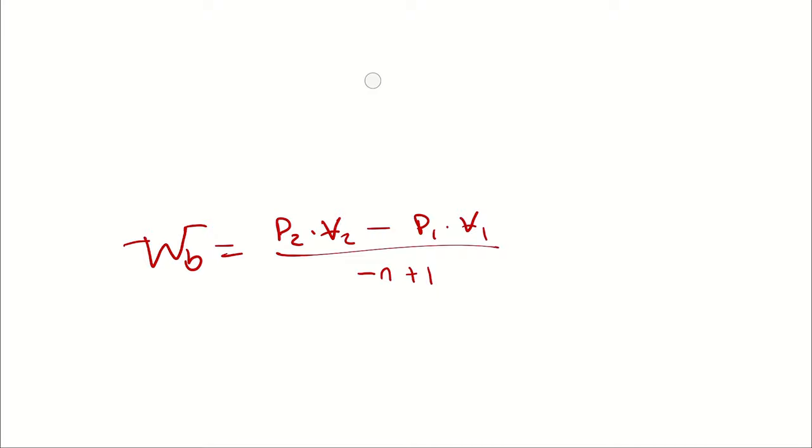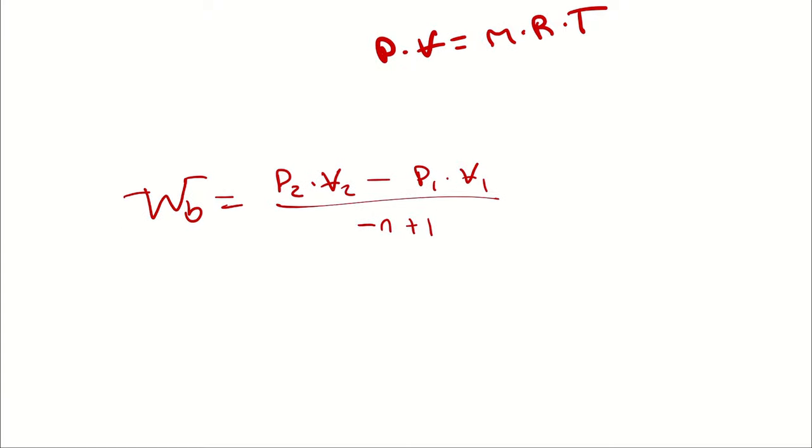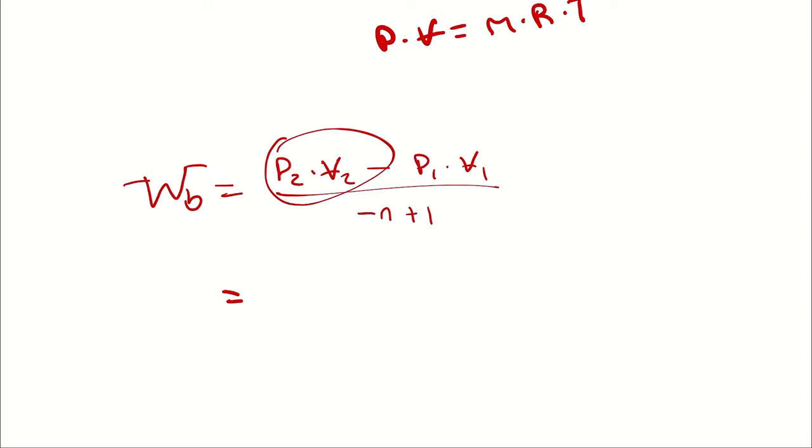So for an ideal gas, the pressure times the volume equals the mass times the gas constant times temperature. Therefore, instead of writing P2V2 here, I could write mass times gas constant times temperature. All of those evaluated at state 2, but mass at 1 is the same as 2 and R at 1 is the same as 2, so I will just write T2. And then P1V1 would become M1 specific gas constant 1 times T1, which again, mass and gas constant are constant from 1 to 2, so I will just write them as mass times specific gas constant. And then T1 divided by negative N plus 1.